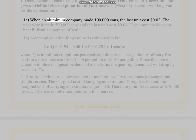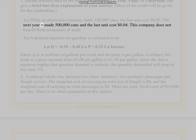1a. When an aluminum company made 100,000 cans, the last unit cost 2 cents. The next year it made 500,000 cans and the last unit cost 4 cents. This company does not benefit from economies of scale.